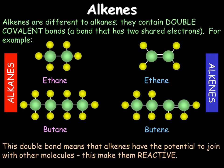The second organic family you need to know are the alkenes. The alkenes are different to alkanes in that they contain a double covalent bond — a bond that has two shared pairs of electrons. For example, instead of ethane we have ethene, and we can see its double bond here. Instead of butane, we have butene — again, we have our double bond.